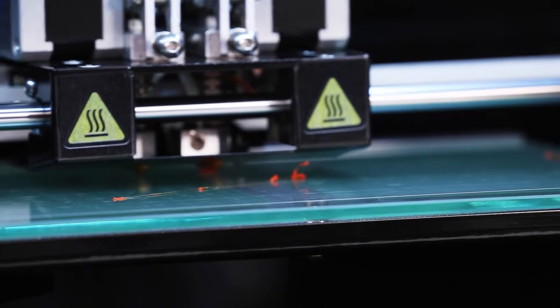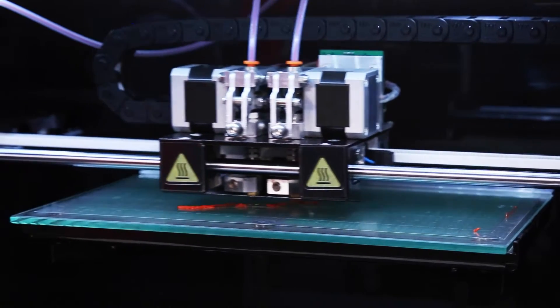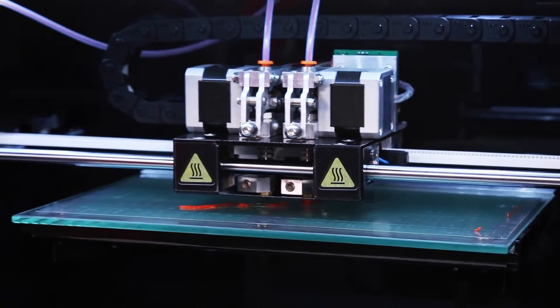If you think you may have a filament jam, you will first need a three millimeter Allen key, tweezers, and needle nose pliers or similar.